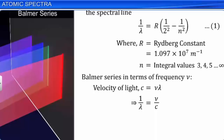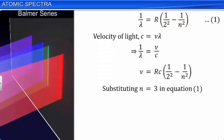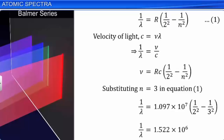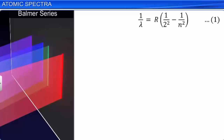Substituting n = 3 in equation 1, we get 1/λ = 1.097 × 10⁷ × (1/4 − 1/9) = 1.522 × 10⁶. Thus, λ = 6563 Å or 656.3 nm. This is the wavelength of the H-alpha line of the Balmer series, in the red of the visible region. For the H-beta line, n = 4, and for n = 5, we obtain the H-gamma line. By putting n = ∞, we obtain the limiting wavelength of the series, equal to 3646 Å or 364.6 nm. The limiting wavelength is the shortest wavelength of the series.